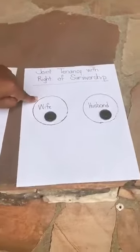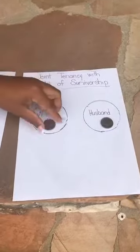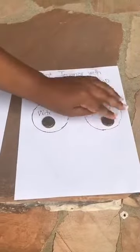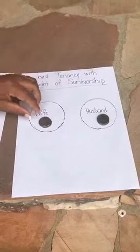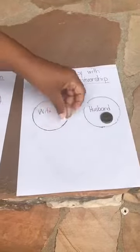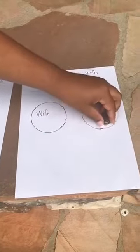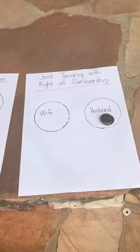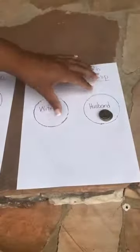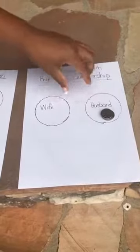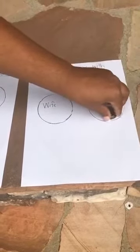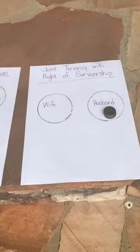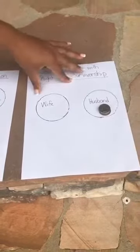A lot of people use a deed called a joint tenancy with the right of survivorship. You each own 50%, as represented by the quarters. If one person were to die, the other person gets the entire ownership and no one else is part of it. This automatically executes and reverts to the other person, so it may not require you to go through probate.